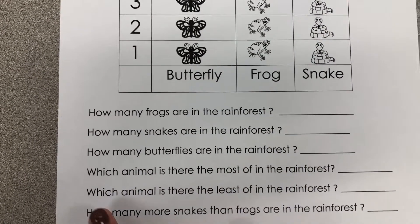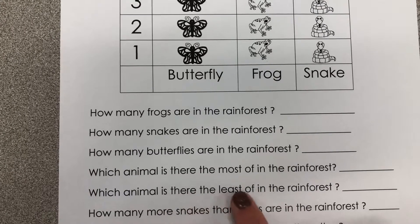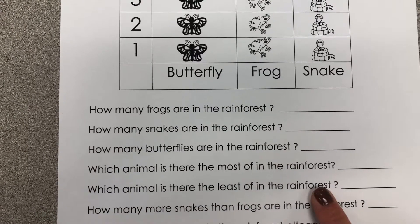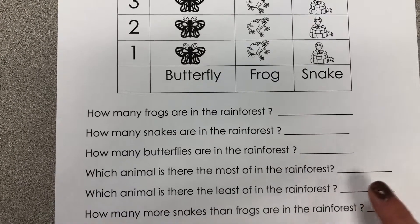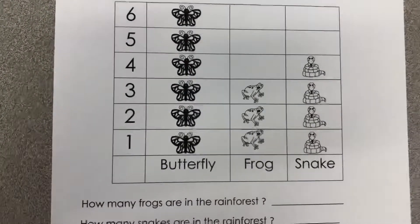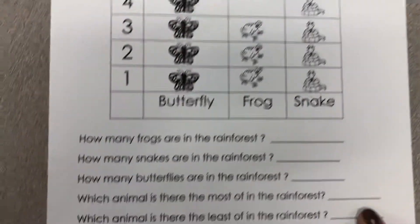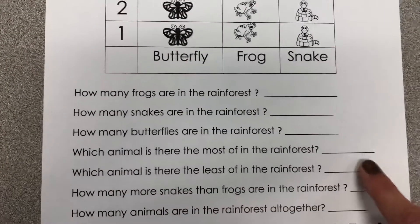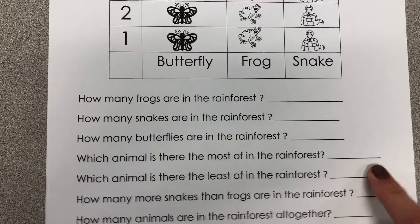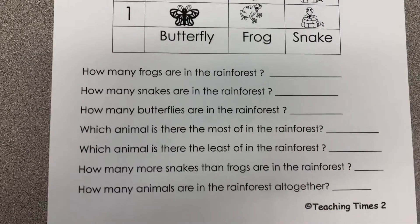Our next question says: which animal is there the least of in the rainforest? Again, we will look at our graph to figure that out. We will write the name of that animal on the line, and we will spell it correctly, because it is in sight where we can see it.